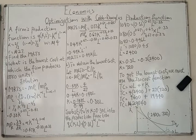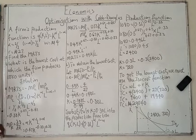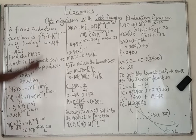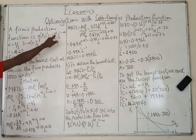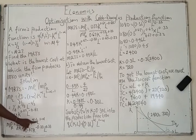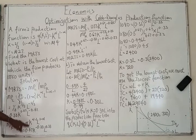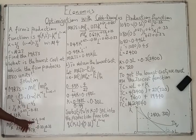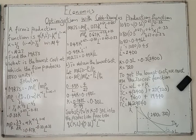We do the same for the marginal product of capital by taking the partial derivative of Q with respect to K. That gives us alpha times K^(alpha minus 1) times L^(1 minus alpha). So MPK equals 0.67 times K^(minus 0.33) times L^0.33.